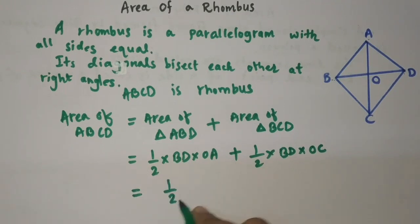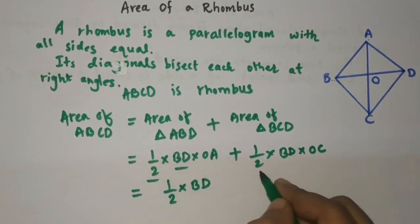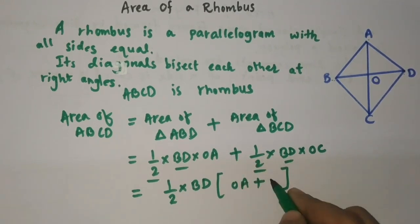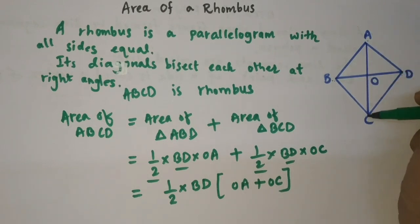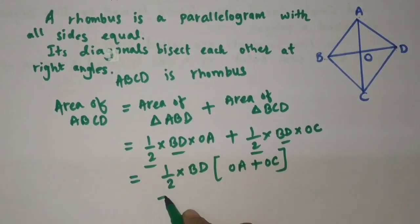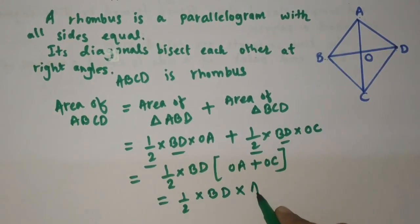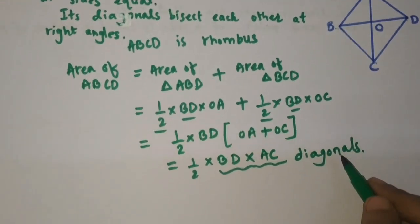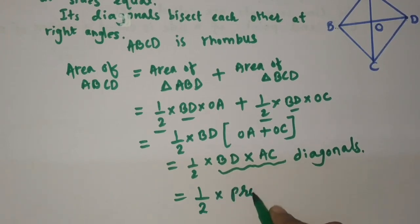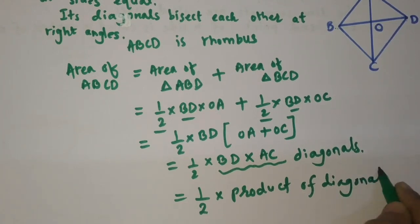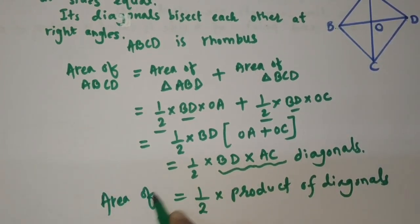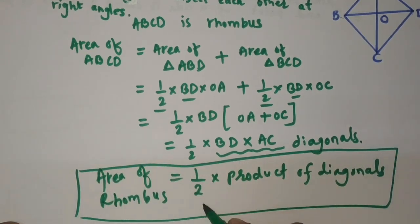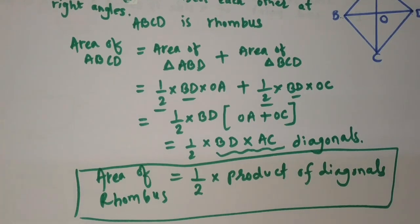Taking ½ and BD as common factors, inside the bracket we are left with OA + OC. OA + OC is nothing but AC. So we get ½ × BD × AC. These BD and AC are nothing but the diagonals. We conclude that the area of a rhombus is ½ multiplied by the product of its diagonals.